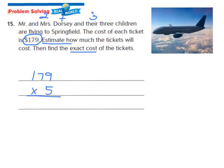For the estimate, I look at 179 and ask what number close to 179 is very easy to work with. I'm going to make that 200, since it's close to 179 and easy to work with mentally. So I multiply 200 times 5. I know that 5 times 2 is 10, and behind 200 there are two zeros, so I add two zeros to my 10. My estimated answer turns out to be 1,000.